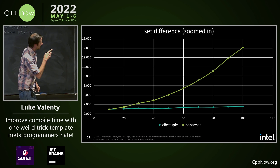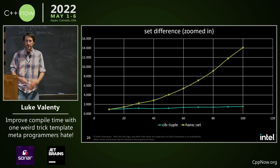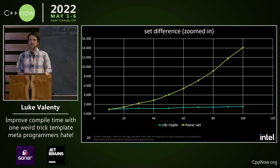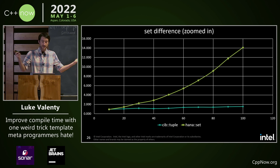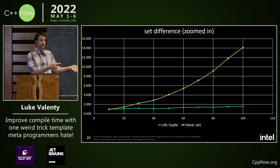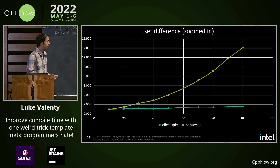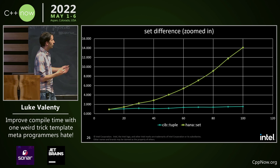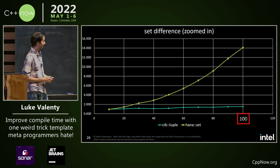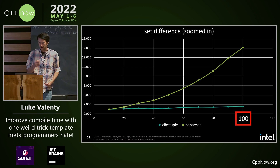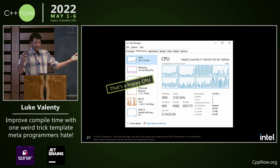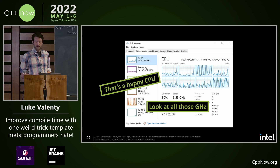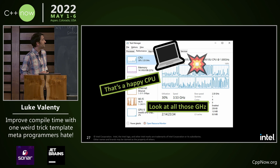If we zoom into the set difference, you might be wondering: is this really slow when we have more practical set sizes? The answer is no — it's still fast all the way down to 10 or even one element, up to 100 elements here. My CPU, surprisingly, is not thermal throttling. This is a happy CPU — it's got lots of gigahertz.